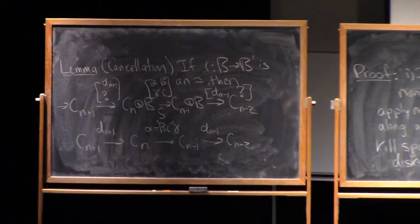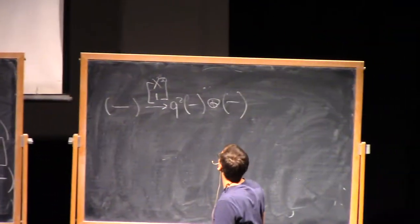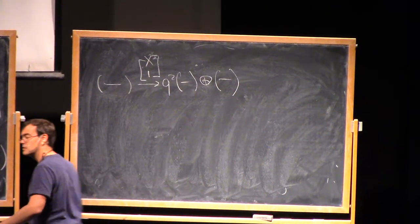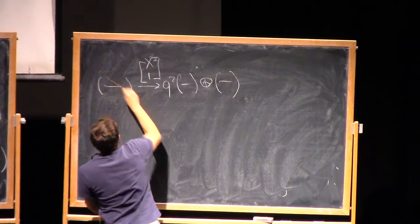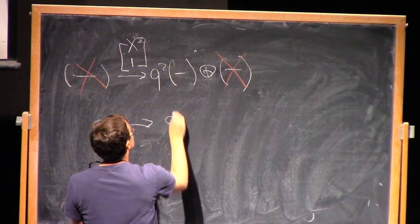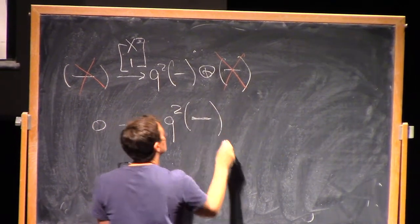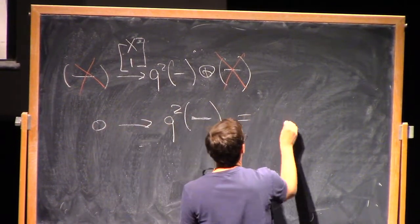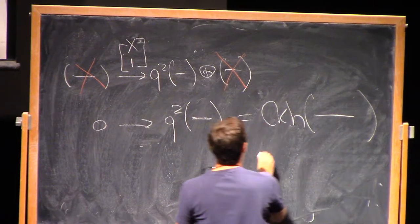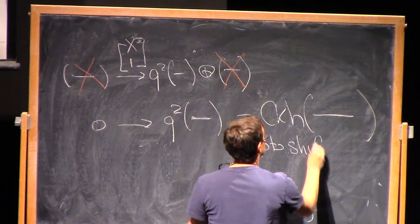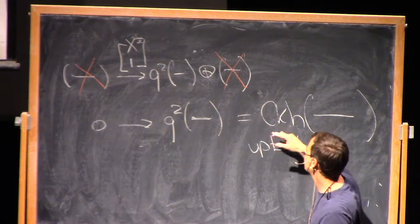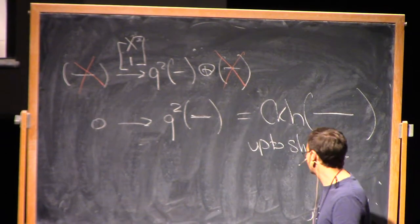But back over here, what does that mean? It means that I have a one here. This is an isomorphism. So that means that I can cancel this object with this object, and I'm left with just nothing goes to q squared times this, which is, let's say, CKh of this tangled diagram up to shifts. And these shifts are the same shifts that you should have gotten when you did the exercise yesterday.